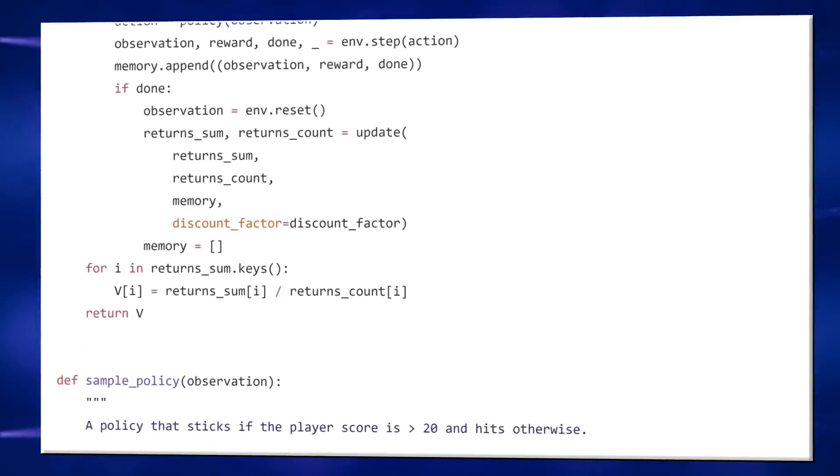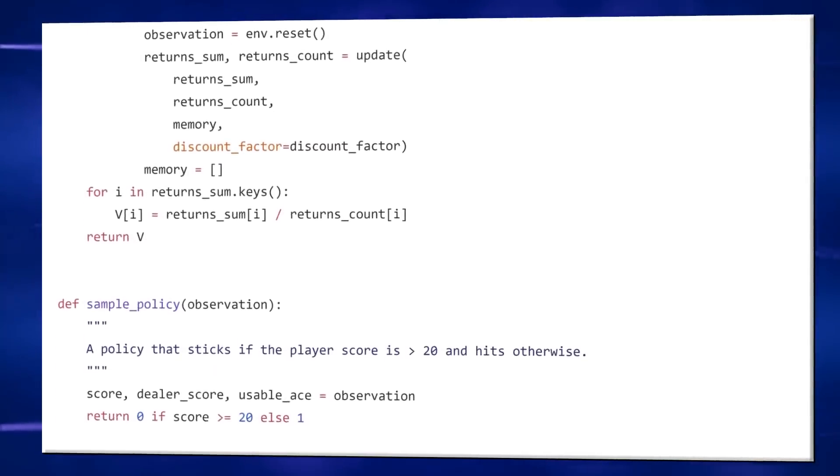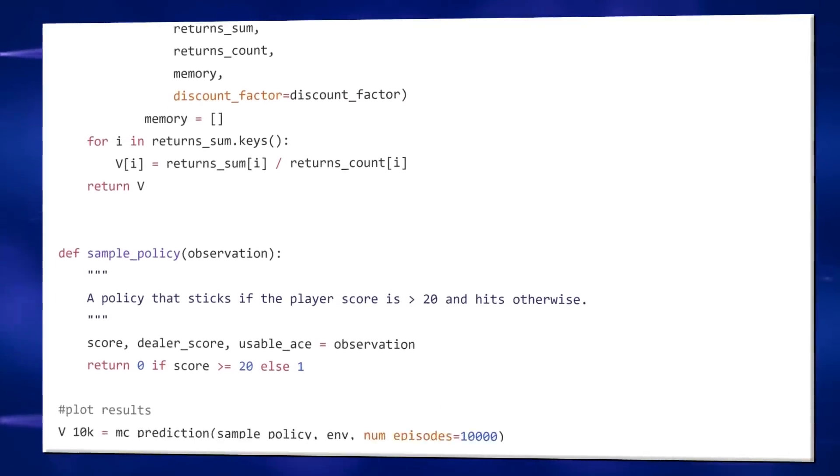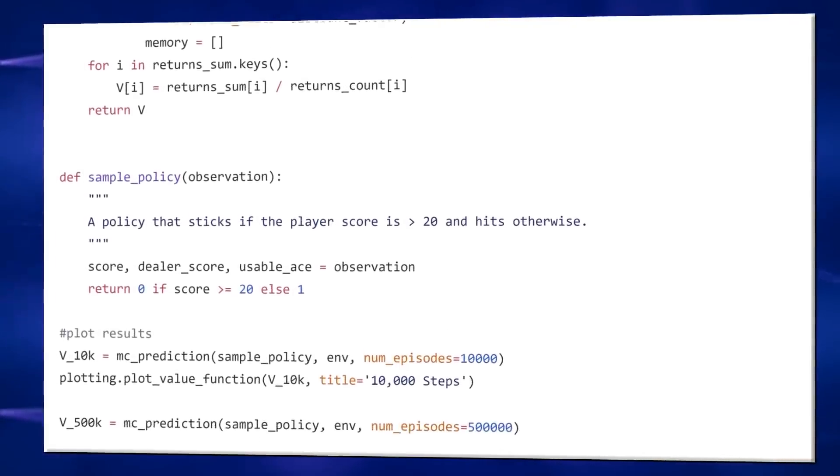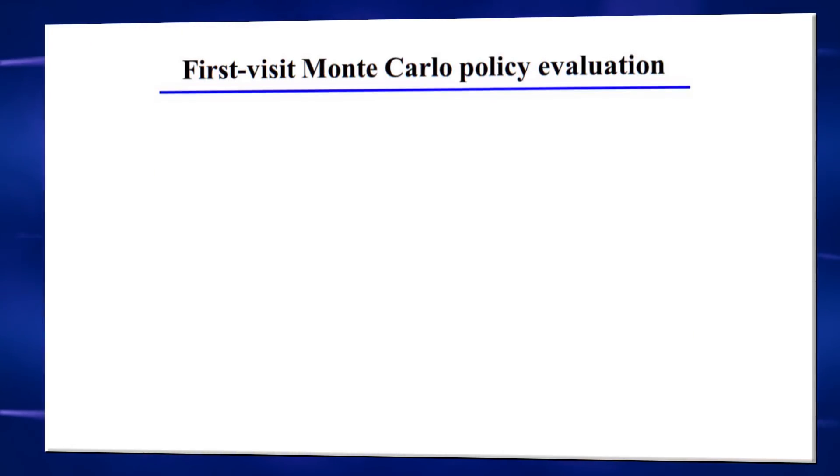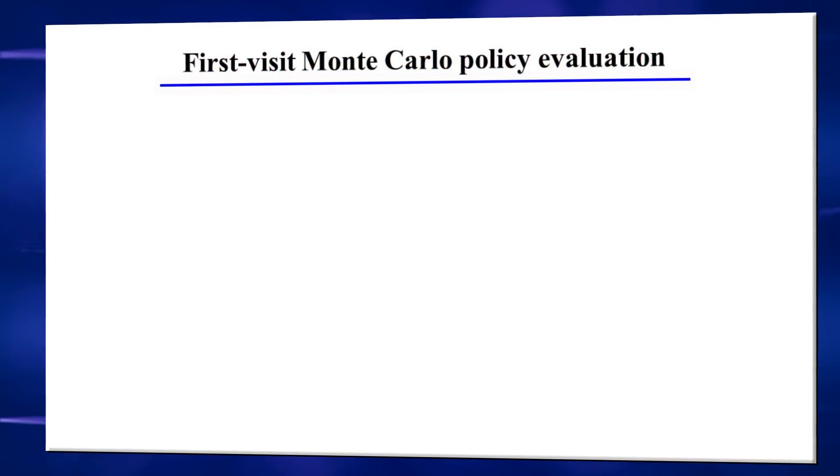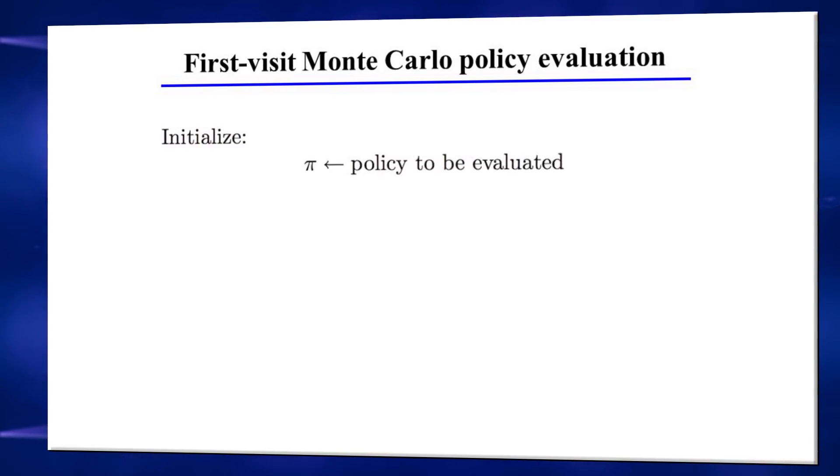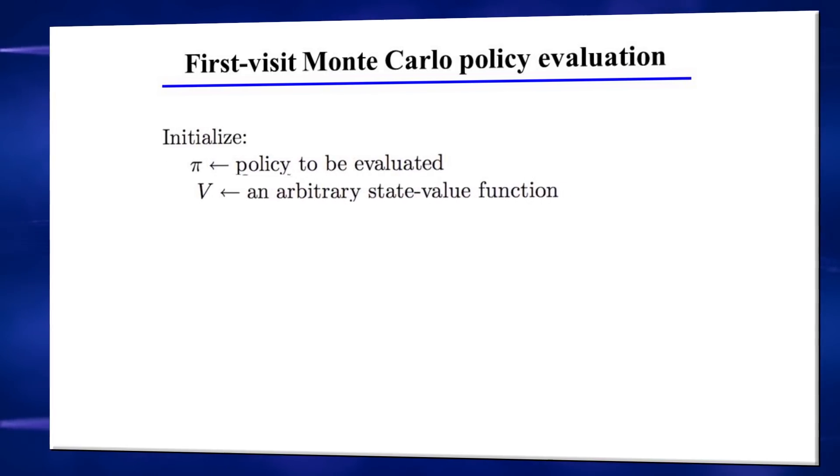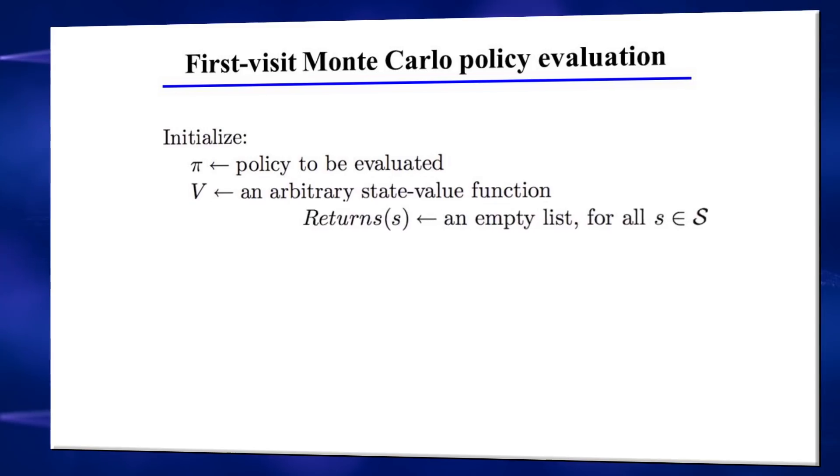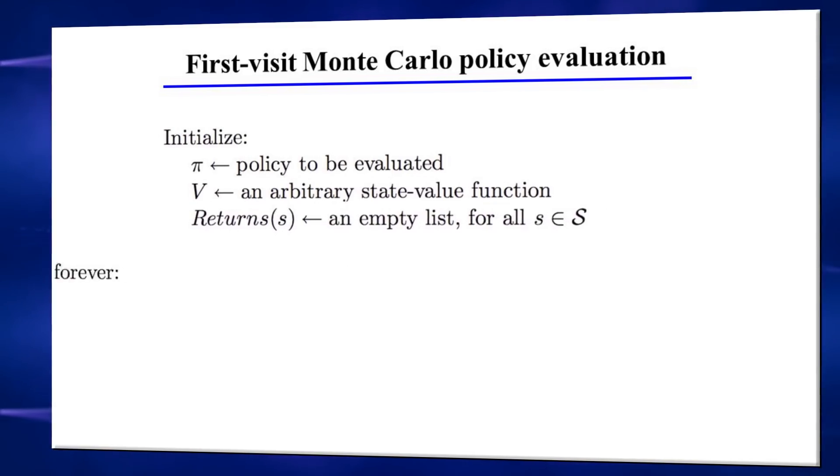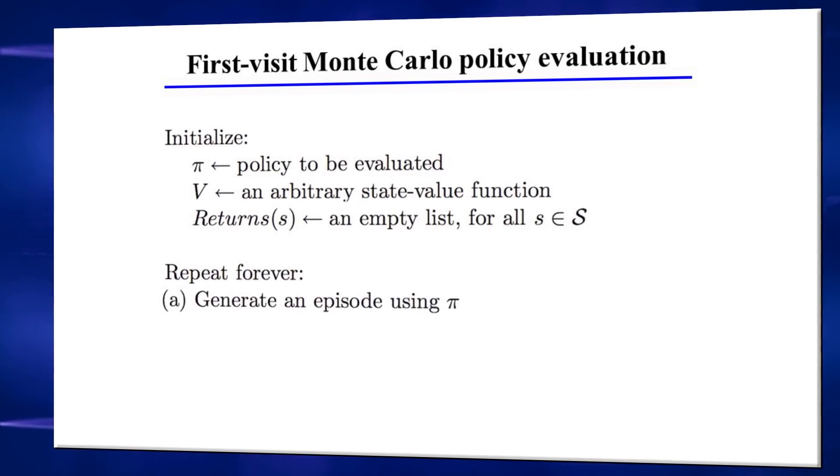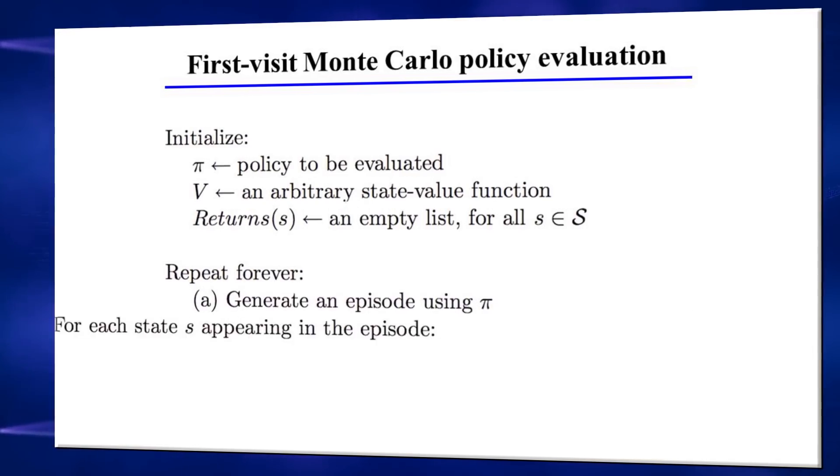In Monte Carlo RL, we are estimating the value function for each state based on the return of each episode. And the more episodes we take into account, the more accurate our estimation will be. Notice, though, that a possible problem could occur. What if we visit the same state twice in a single episode? Well, there are actually two types of Monte Carlo policy evaluation. First visit and every visit. We'll focus on first visit in this video. First visit only recognizes the first visited state. Every second visit does not count the return for that state visit and the return is calculated separately for each visit.